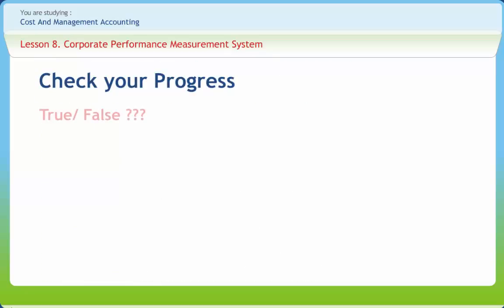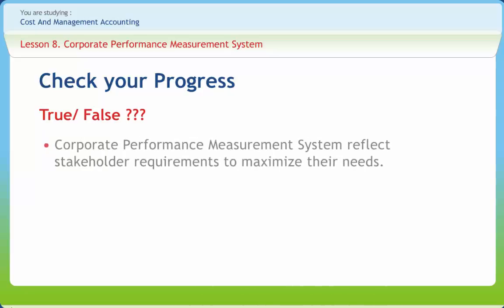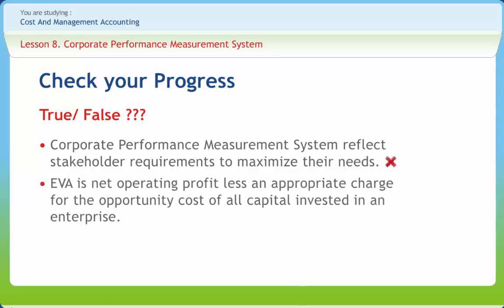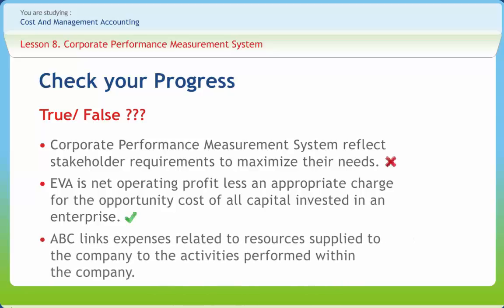Now let us check if we have understood the various concepts discussed in this lesson clearly. Corporate performance measurement systems reflect stakeholder requirements to maximize their needs. Right or wrong? Wrong. EVA is net operating profit less than appropriate charge for the opportunity cost of all capital invested in an enterprise. Right or wrong? Right. ABC links expenses related to resources supplied to the company to the activities performed within the company. Right or wrong? Right.